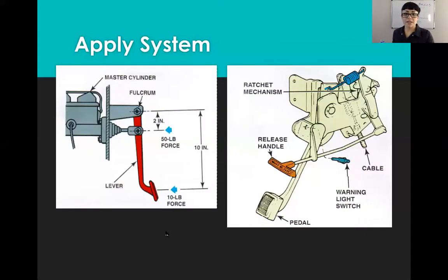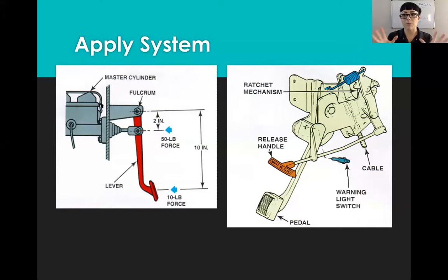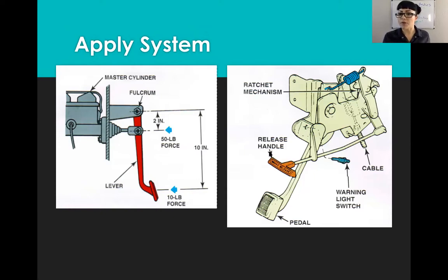Looking at the apply system: on the left we have a pedal with a fulcrum - a pivot point. We'll get way more in depth in brakes class on how the length of this pedal affects everything. There's something called a push rod that applies the master cylinder I keep mentioning. We're not showing power brakes here - we're just looking at the fundamental portion. This push rod is going to apply that master cylinder, creating an action that applies hydraulic pressure.